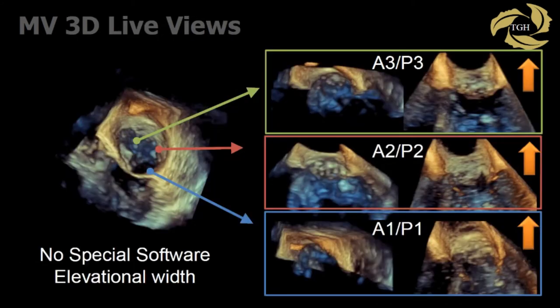You can also just look at 3D live views. This is the entire mitral valve in 3D live. What you can do is use your elevational width — as on the Epic machine; GE has a similar product — where you can scroll back and scroll forward. Scrolled back, I'm at A3P3. Scrolling forward — A2P2. And finally, the most forward — A1P1. All I've done is slice through the mitral valve using 3D live. And if I'm looking for prolapse, I can tilt this to look through a true sagittal section. Very simply, you can look at a mitral valve without any specialized software.